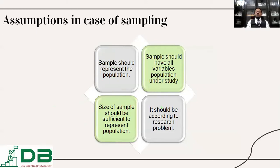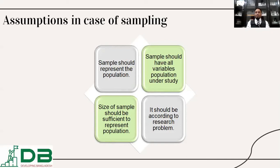Assumptions in the case of sampling: the sample should represent the population. The first assumption of sampling is that our sample should be selected using criteria where the sample will be representative of the overall population. That means if the population has five different criteria of people, then our sample should have representatives from each different criteria.